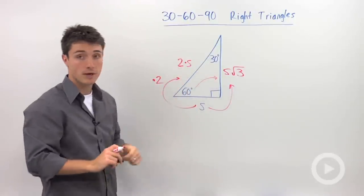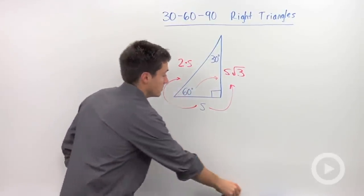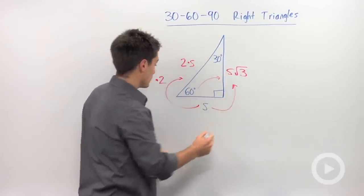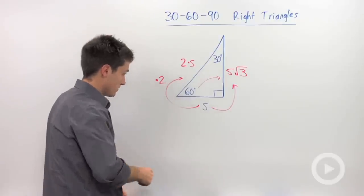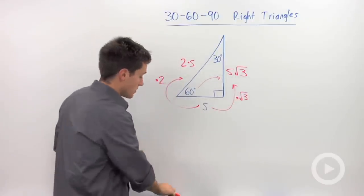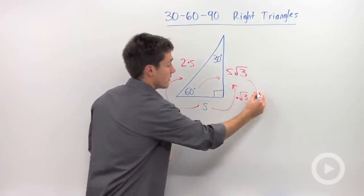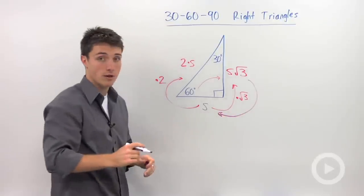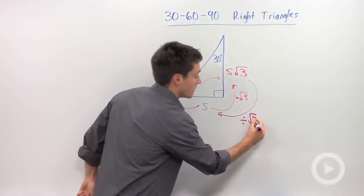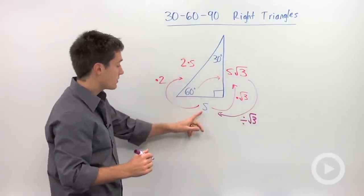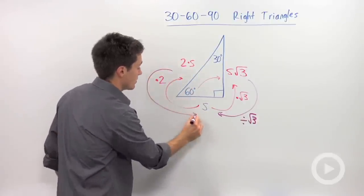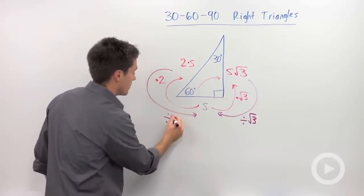So this works in both directions. Let's say you had your longer leg and you wanted to find the other two sides. Well, first, and actually I guess I forgot to write down right here that you would multiply by the square root of three. So let's say you wanted to go in the opposite direction, from your longer leg to your shorter leg. Well, the inverse operation of multiplying by the square root of three is to divide by the square root of three. The inverse operation of going from your hypotenuse to your shorter leg is going to be not multiplying by two, but dividing by two.